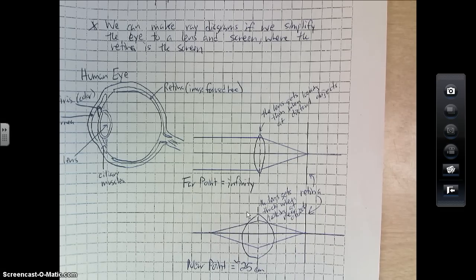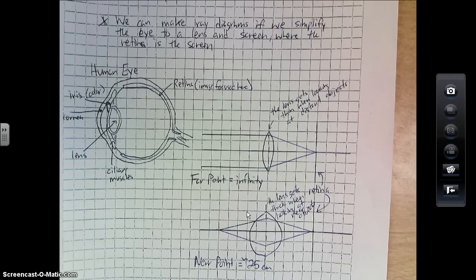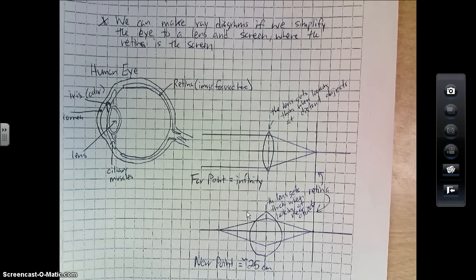That point, the far point, is known as the position of the farthest object that can be brought into focus by the unaided eye. That's what the far point is—it's the farthest thing you can see. It's fairly self-explanatory.